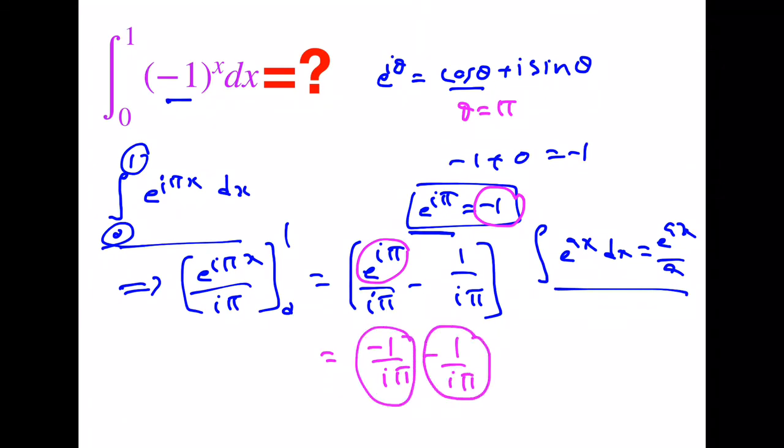Then I get -1/(iπ) minus 1/(iπ), that equals -2/(iπ). Now I am applying the rationalization factor i/i, so then I get -2i/(i²) which equals -2i/(-1) = 2i/π. So this is the answer for the given problem.